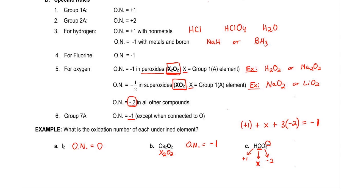Now we're just going to solve for the missing variable. So we have one plus X, three times negative two gives me negative six, equals minus one. The positive one and the negative six combine to give me negative five.